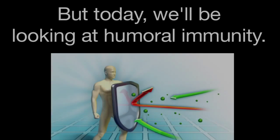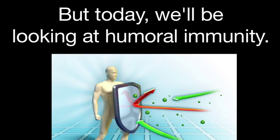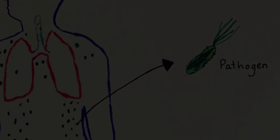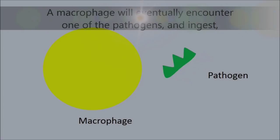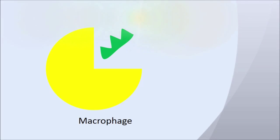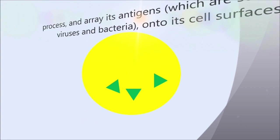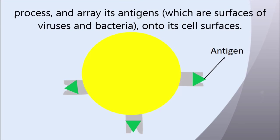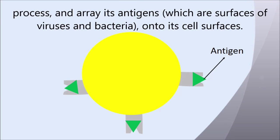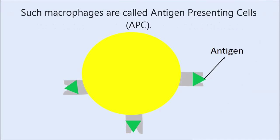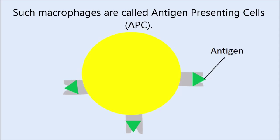But today, we'll be looking at humoral immunity. When pathogens enter our body, a macrophage will eventually encounter one of the pathogens and ingest, process, and array its antigens — which are surfaces of viruses and bacteria — onto its cell surface. Such macrophages are called antigen-presenting cells.